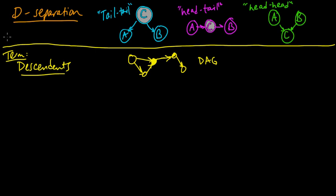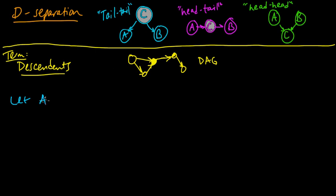Now we will introduce a critical definition. Before that, let's set up the context. Previously we were talking about A, B, and C being individual random variables. Now we're going to generalize and think of A, B, and C as sets of random variables — explicitly as subsets.